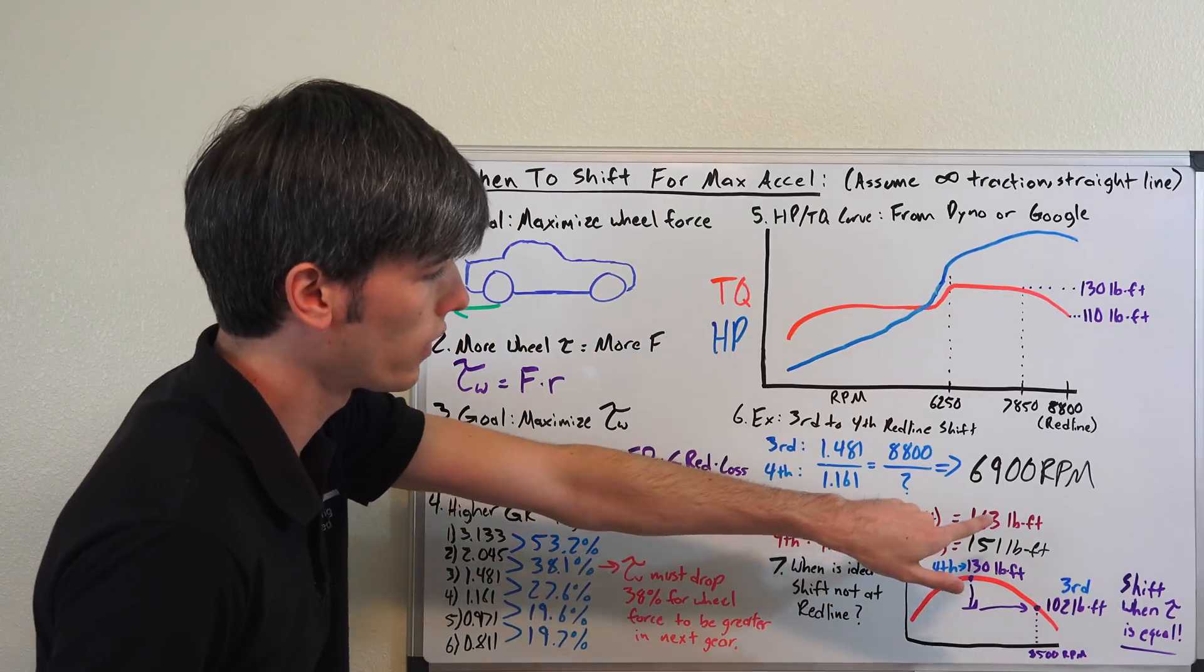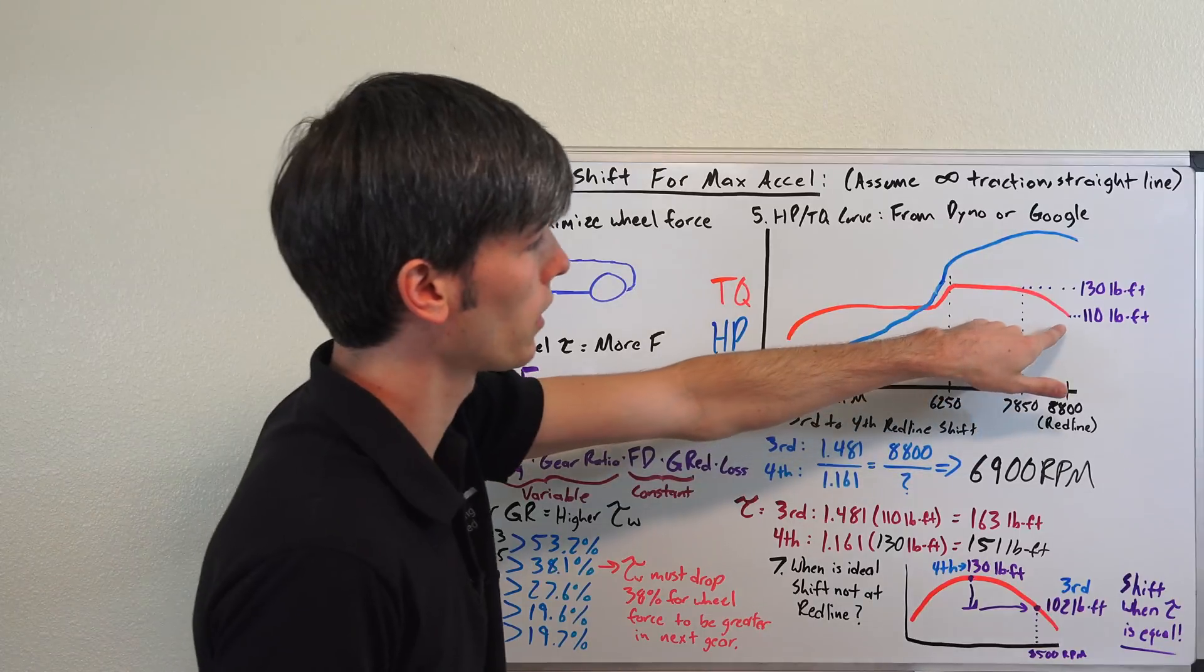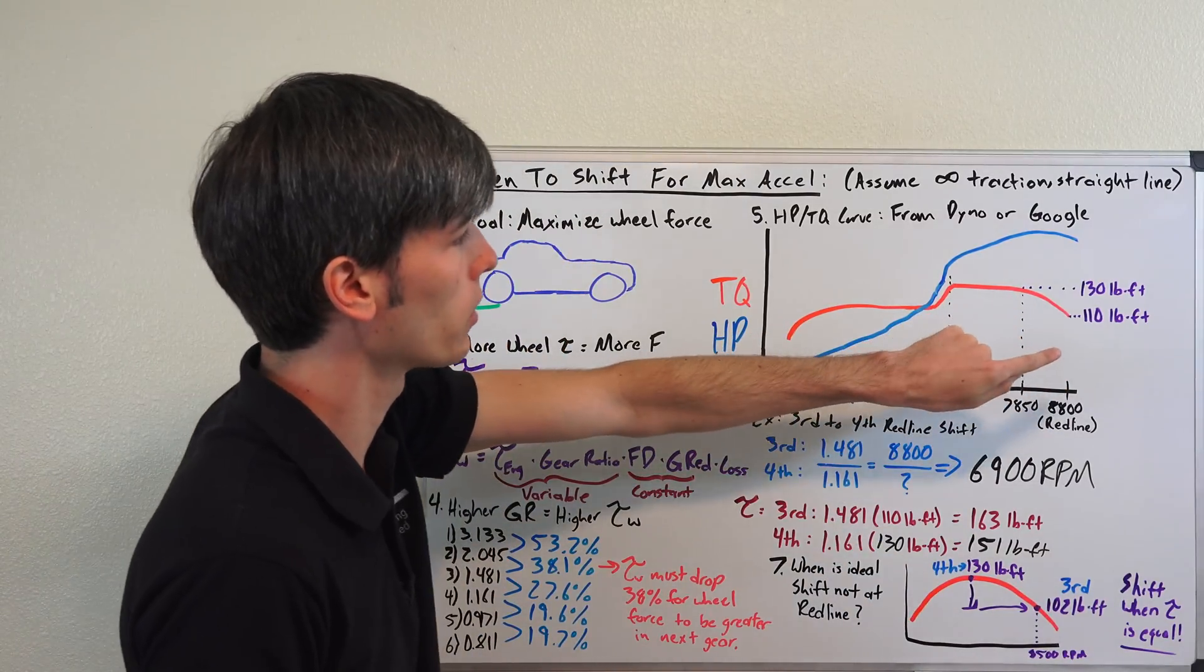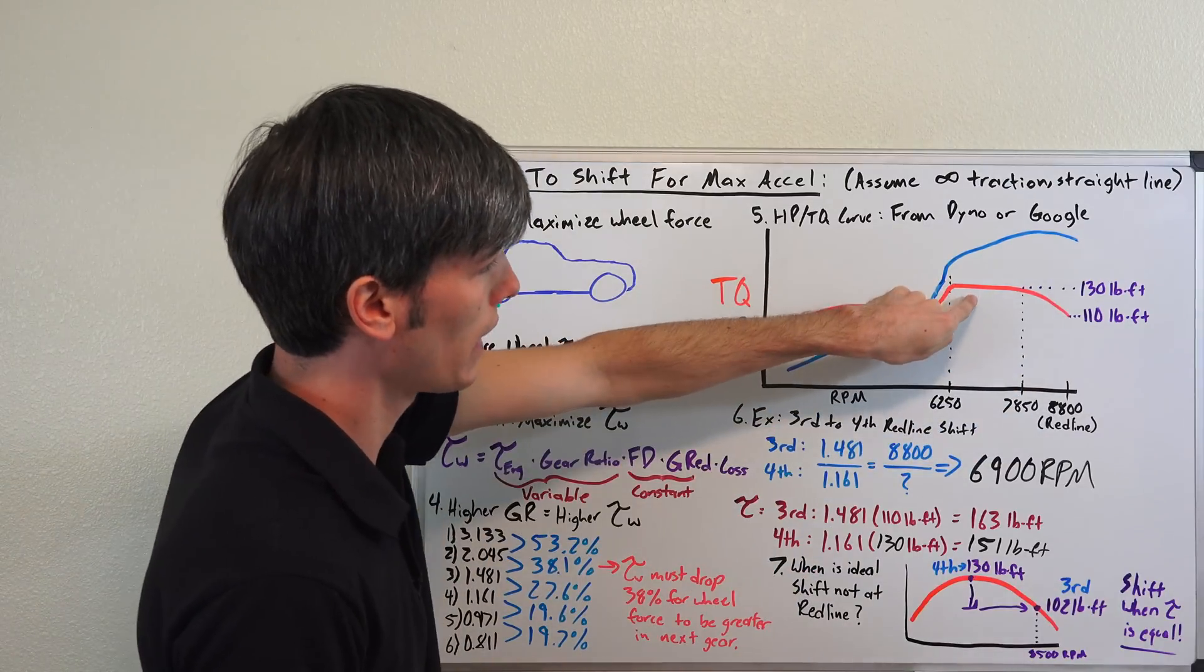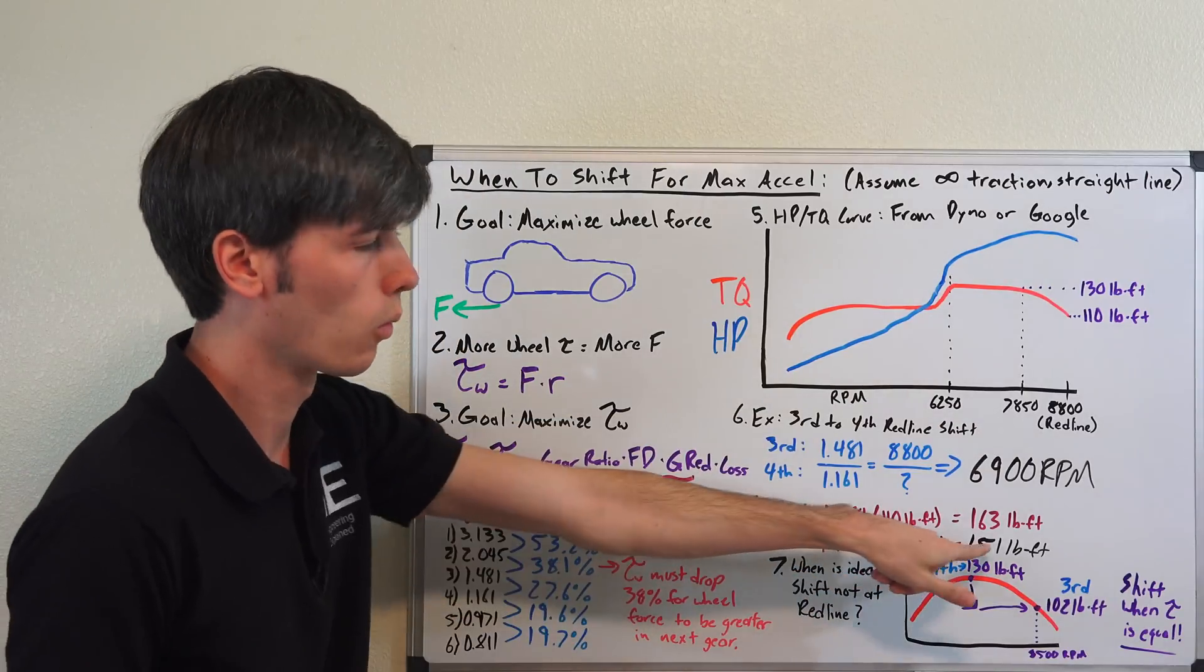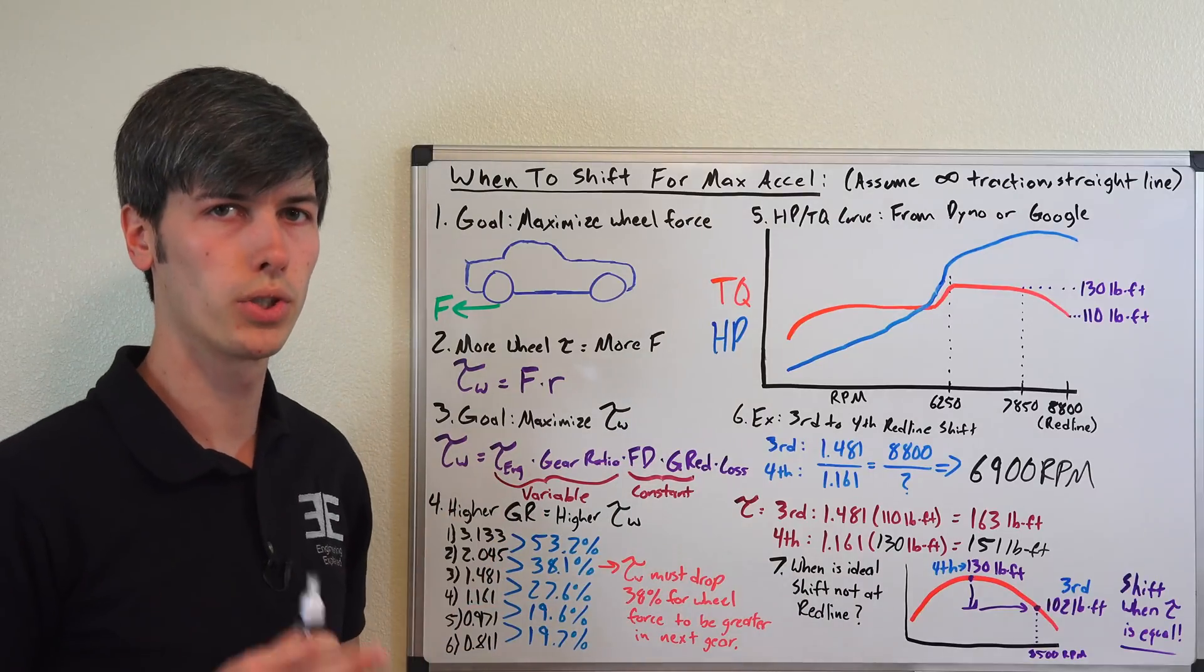So as you can see, 163 is higher than 151. So what that means is, in third gear, at 8800 RPM, we were putting down more wheel torque than when we shift down to fourth, even though we're now at peak engine RPM, because of the gear reduction, we're putting down less torque at the wheels. So it was a smart decision to shift at redline.